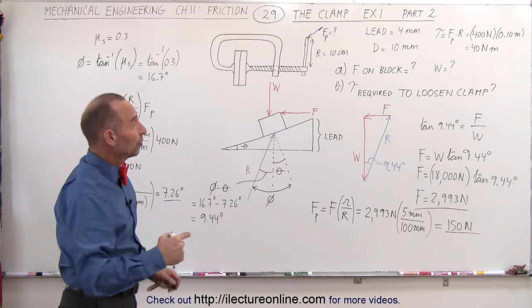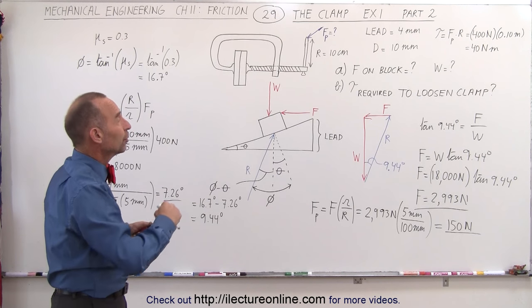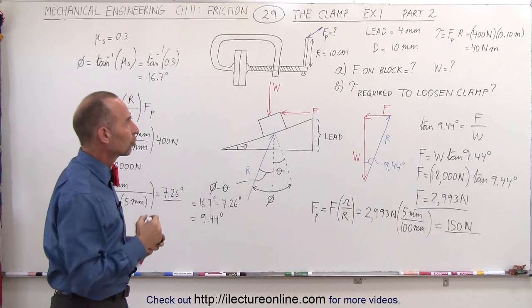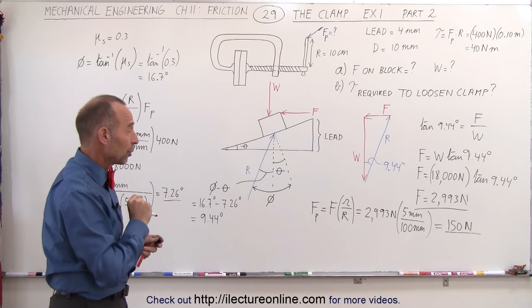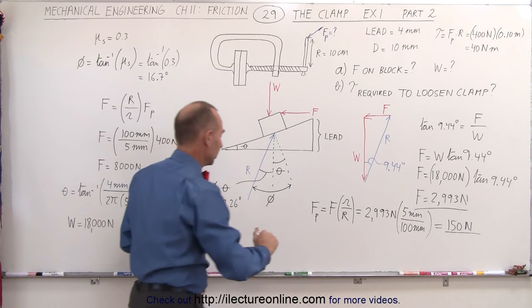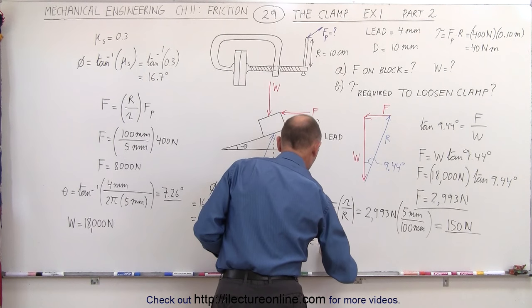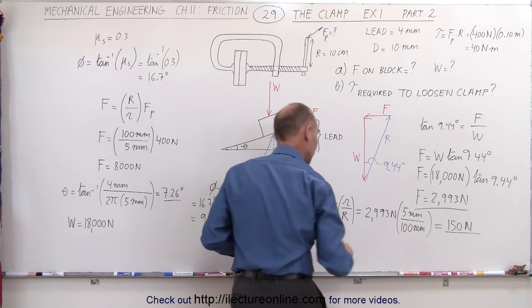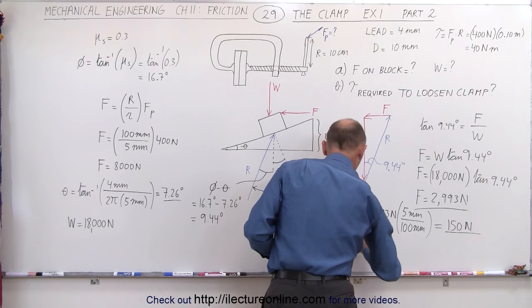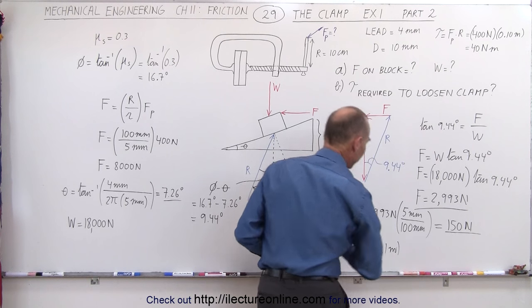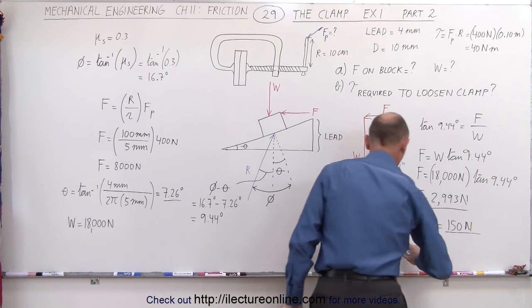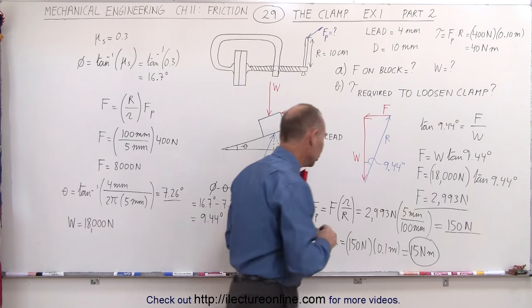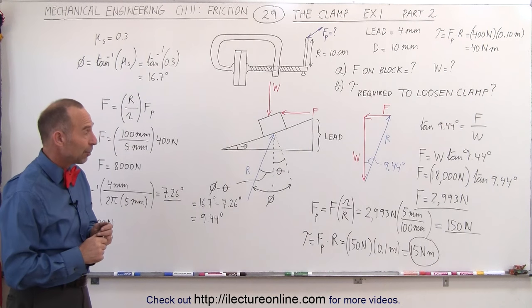So it required a force of 400 newtons in the previous video to tighten the blocks. It requires a force of 150 newtons to loosen the blocks. Next, what we're going to do is find the torque. The torque is equal to F sub P times the moment arm, which is big R. That would be equal to 150 newtons times 0.1 meter, which gives us 15 Newton-meters of torque required to loosen the clamp. And that's how we do that.